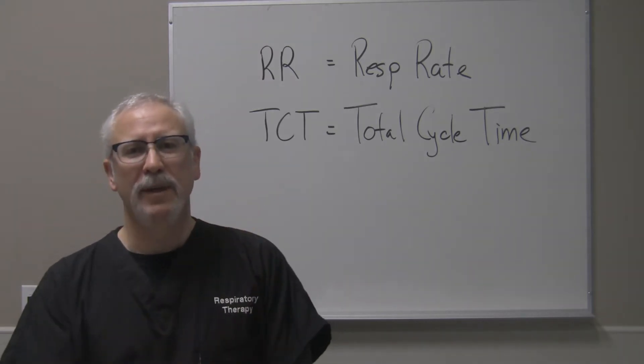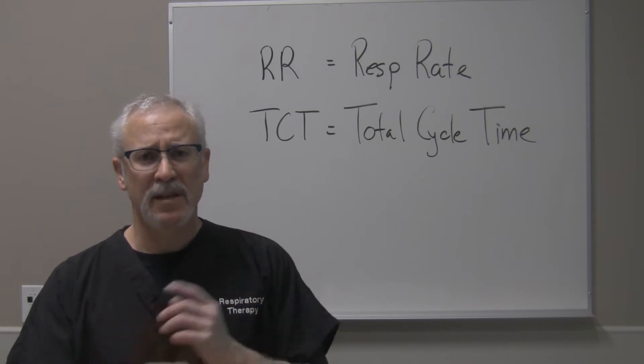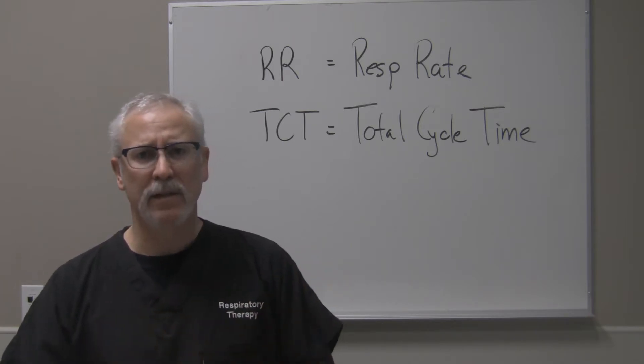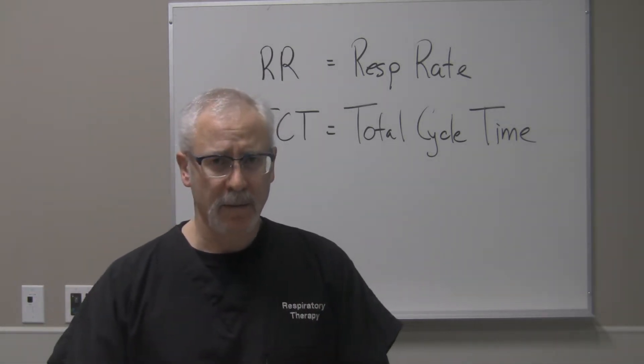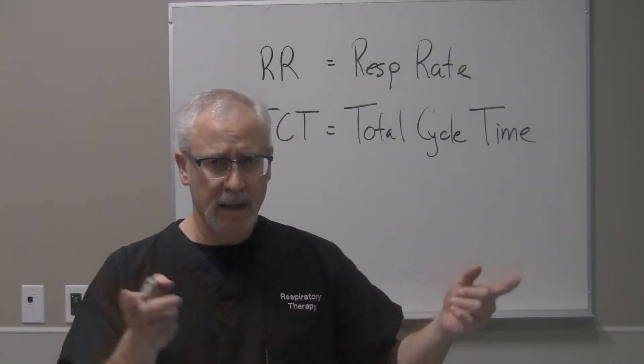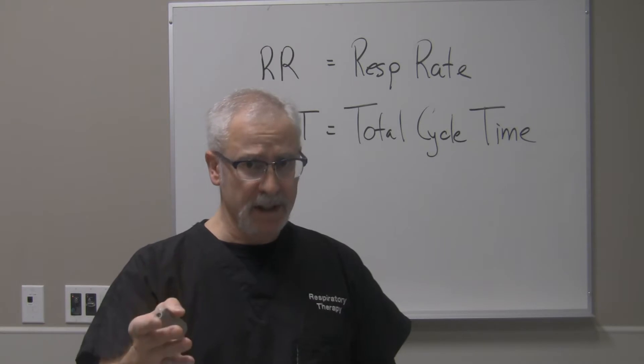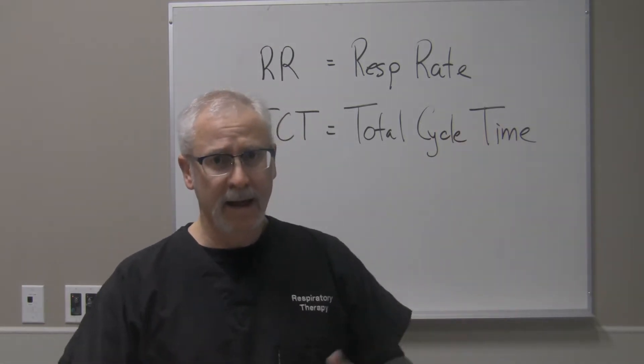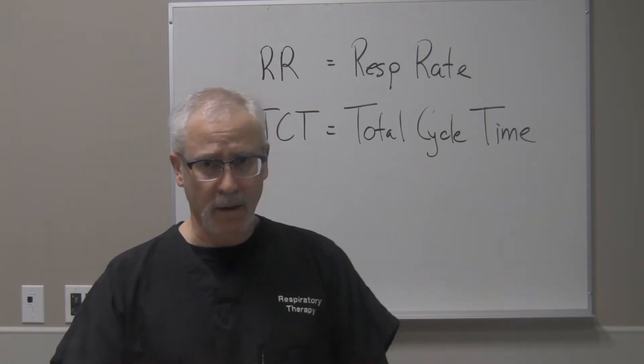So as you can see on the board behind me, respiratory rate is abbreviated RR and total cycle time is TCT. Total cycle time is essentially just the time that it takes for one complete ventilatory cycle to occur. When we're talking about a ventilatory cycle, we're talking about the entire time of inspiration and the entire time of exhalation combined together, from the beginning of inspiration all the way to the end of exhalation—the time that it takes for one complete ventilatory cycle to occur.